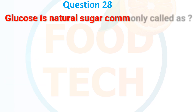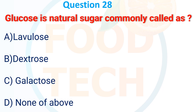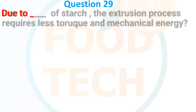Question 28: Glucose is a naturally occurring sugar, commonly called as — A. Levulose, B. Dextrose, C. Galactose, D. None of the above. The answer is B. Dextrose.